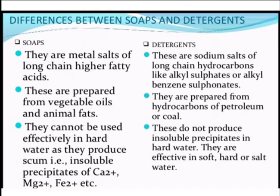Comparing soaps and detergents: soaps are metal salts (sodium or potassium) of long-chain higher fatty acids, while detergents are sodium salts of long-chain hydrocarbons like alkyl sulfates or alkyl benzene sulfonates. Soaps are prepared from vegetable oils and animal fats; detergents are prepared from hydrocarbons of petroleum or coal. Soaps cannot be used effectively in hard water as they produce scum — insoluble precipitates of Ca²⁺, Mg²⁺, Fe²⁺ — whereas detergents do not produce insoluble precipitates in hard water and are effective in soft, hard, or salt water.